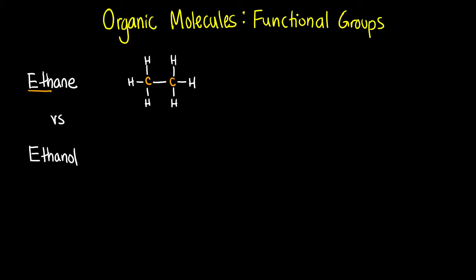Ethane with the prefix ETH meaning two carbons has a formula C2H6. What is different about ethane versus ethanol?